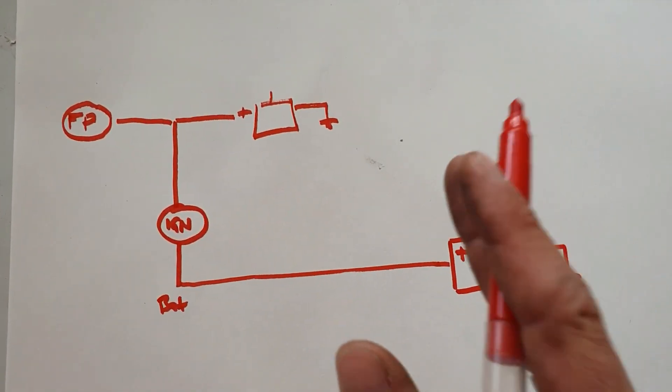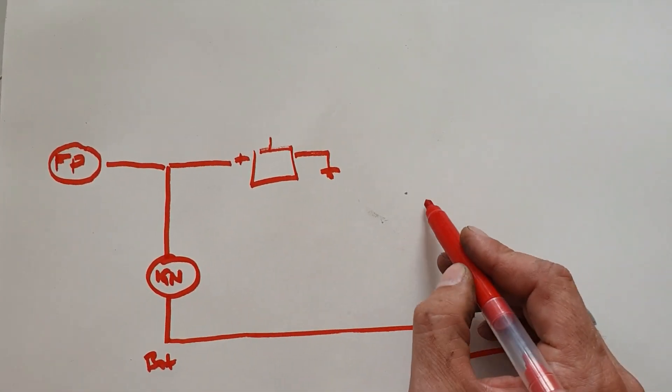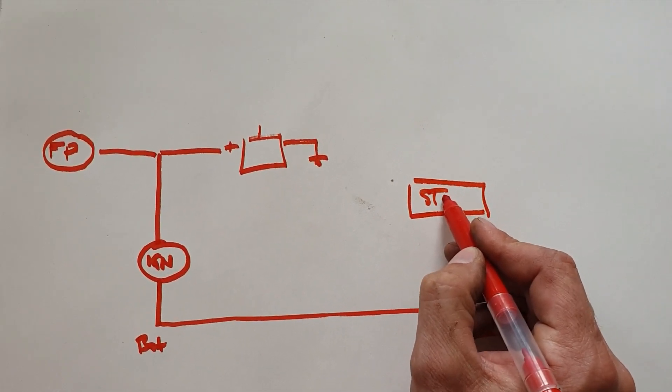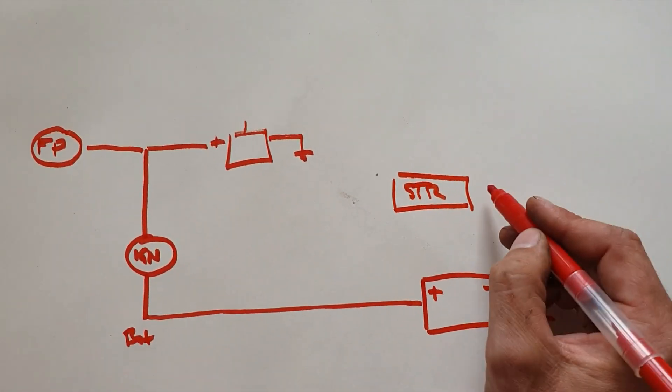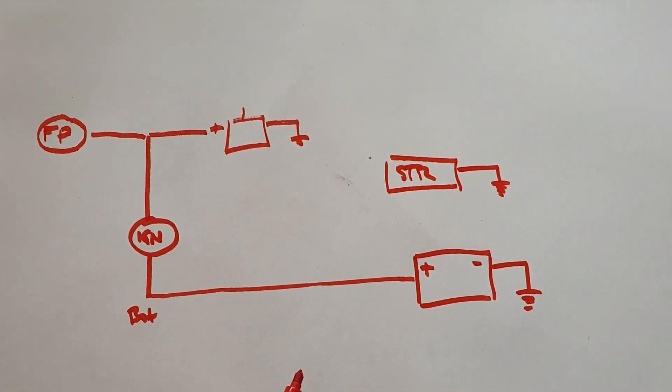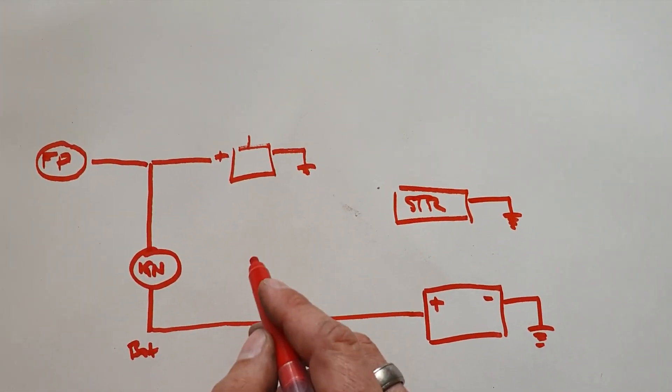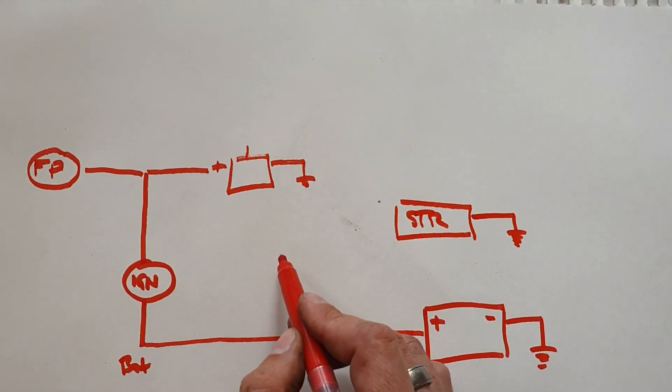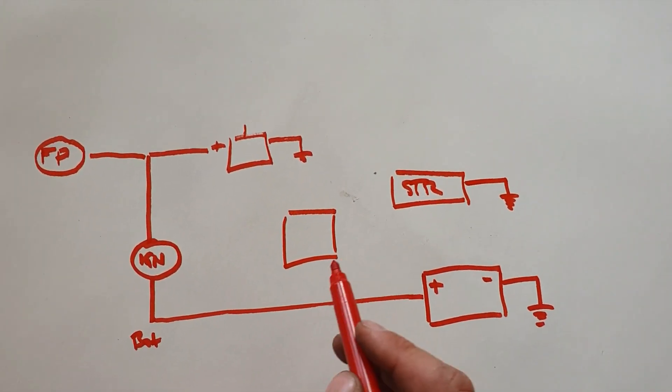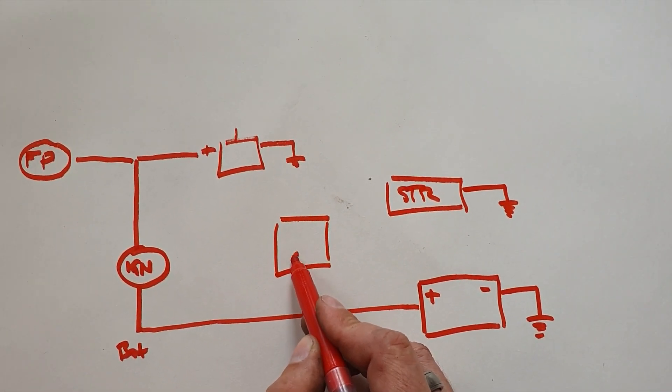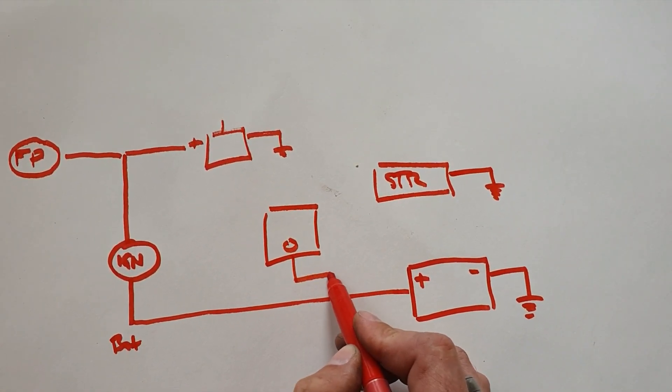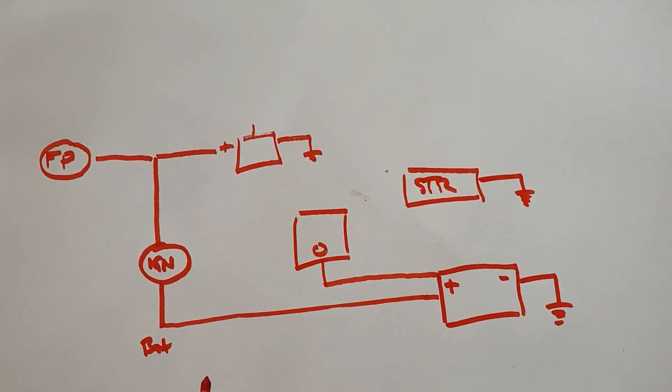So here is our starter which again is grounded through the case into the body like that. And sitting between there and the ignition and the battery we're going to have a relay. Now there's going to be a large zero gauge cable running from there to the battery, a direct connection.